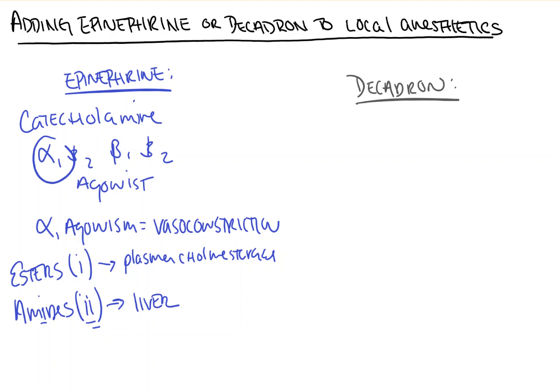As you vasoconstrict the blood vessels, it makes it harder for the local anesthetic to get back into the blood and back to either the liver or to come in contact with the plasma esterases. The take-home message is that adding epinephrine does two things. It increases the dose you can give—for example, with lidocaine, normally you can give 5 mg/kg, but you can go to 7 mg/kg because the vasoconstriction prevents most of it from going into the blood as quickly.